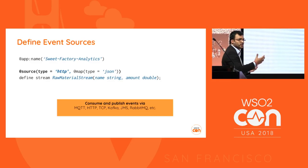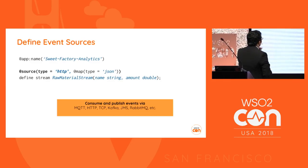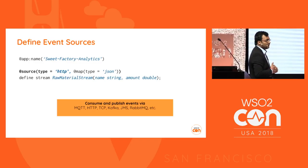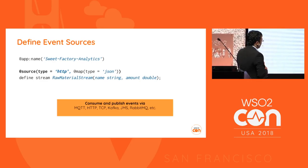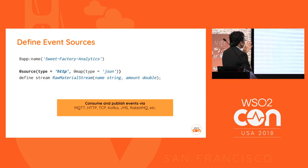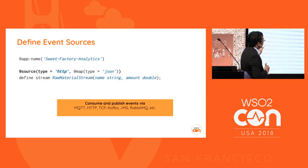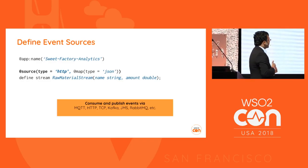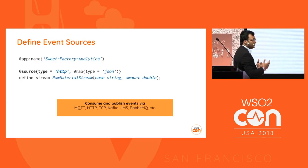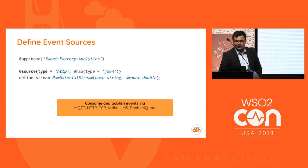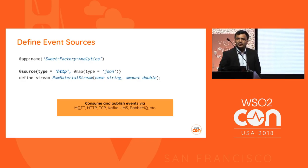The raw material stream has two attributes: name (string) and amount (double). We can receive events from multiple data sources through different transports like MQTT, HTTP, TCP, Kafka, and JMS. You can also write your own transport - the system provides extensibility for that. We also support text, XML, JSON, and binary data types for receiving events.